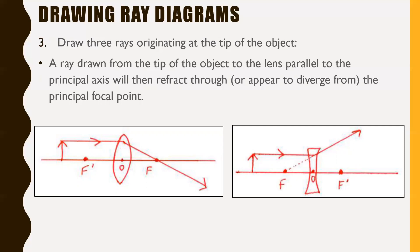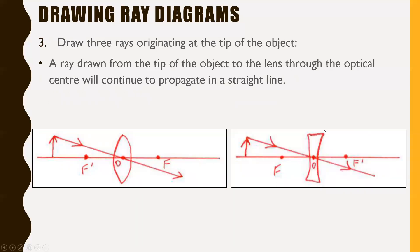Just remember: convex lenses bend rays inward, concave lenses bend rays outward. The second rule is a ray drawn from the tip of the object to the lens through the optical center will continue to propagate in a straight line. This is a big difference from mirrors. For mirrors, the second rule involved the center of curvature and reflection. For lenses, the ray passes through the optical center — the geometric center of the lens — and is never refracted at all. It just keeps going, whether it's a convex or concave lens.